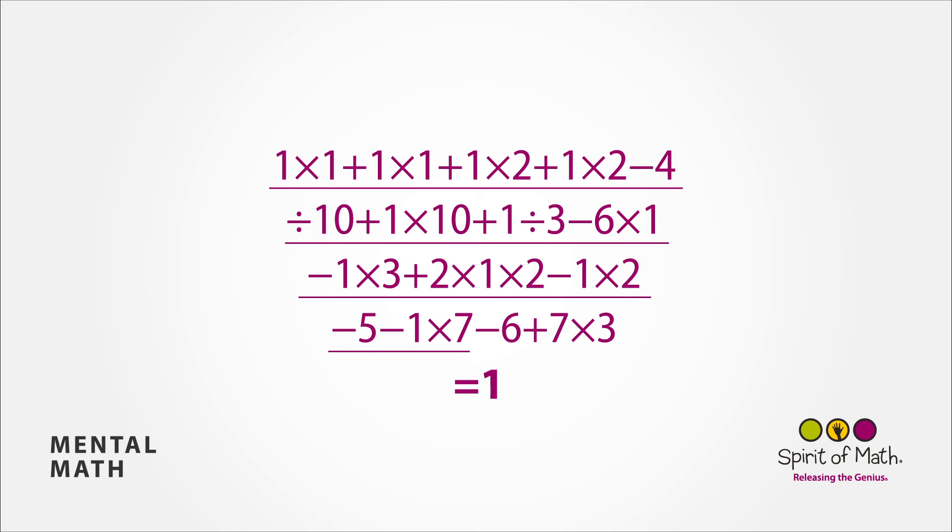Multiplying that by 7 leaves you still with a 0. 0 subtract 6 is negative 6, plus 7 is 1, times 3 is 3, and finally subtracting 2 leaves you with 1. How did you do?